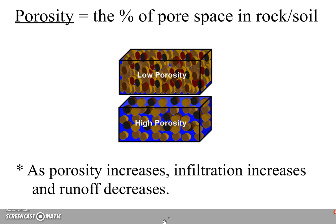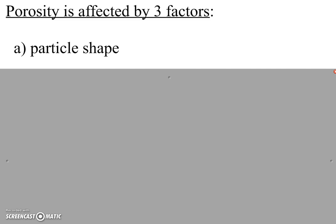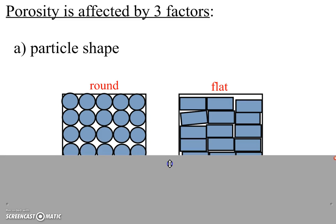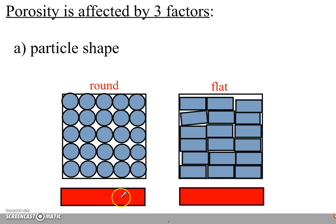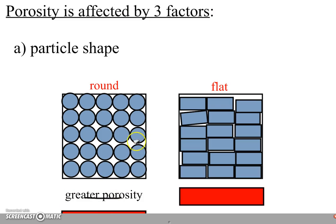Now there are three main factors that affect porosity. The first one we're going to look at is particle shape. If we think about a section underground that's made of soil, certain soil particles might be round and other soil might have particles that are more flat or angular. If you look at the empty pore spaces in each of these, it's pretty easy to see which one has a higher porosity. The rounder the particle, the greater the porosity.